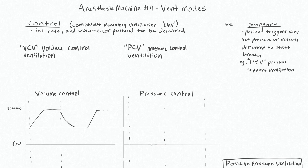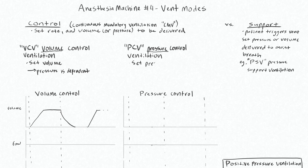You have to choose between either a volume control or a pressure control mode. For the volume control mode, what you're doing is controlling the volume — you set the volume that you want the ventilator to deliver, and then your dependent variable is the pressure. Versus in a pressure control mode, you set the pressure the ventilator is going to deliver, and then your volume is your dependent variable.